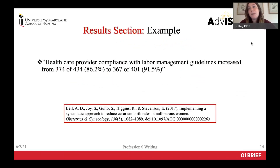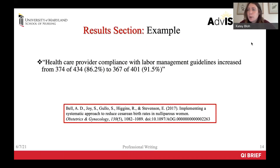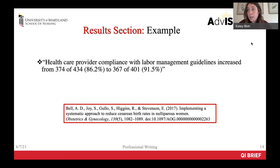Here's an example from the Bell article: healthcare provider compliance with labor management guidelines increased from 37% to 67%. This result focuses on a process measure by discussing how well providers accepted and utilized this new evidence-based tool. Due to the short implementation periods of DNP projects at the University of Maryland, we often focus more on structure and process data. You certainly can include outcomes data if you were able to collect that information. This example compares a beginning to an end, or pre- versus post-data. In order to display how the data changed week to week or over time, the run chart is an excellent tool to use here.